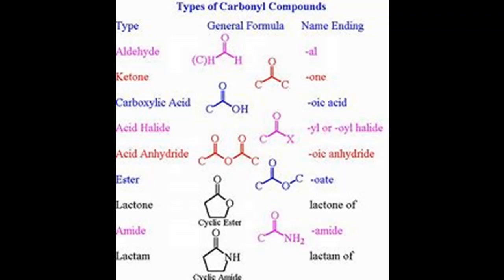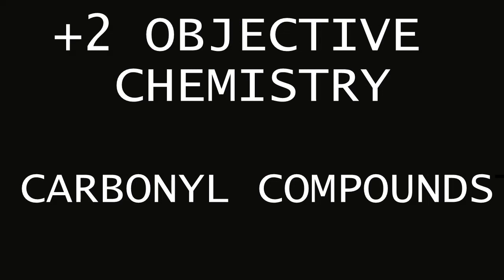Which of the following compounds is oxidized to give ethyl methyl ketone? Options: 2-butanol, 2-propanol, 2-pentanone, 1-butanol. The answer is 2-butanol, that is 2-butyl alcohol.